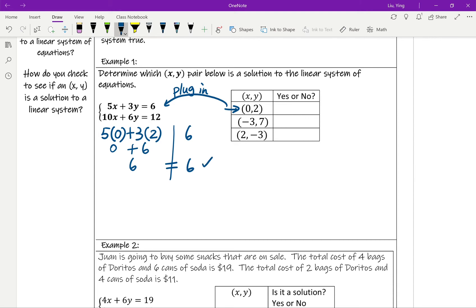Now we're going to do the same thing to check the second one. So 10 times 0 plus 6 times 2. And then we're going to see if that's 12. So 10 times 0 is 0. 6 times 2 is 12. 0 plus 12 is 12.